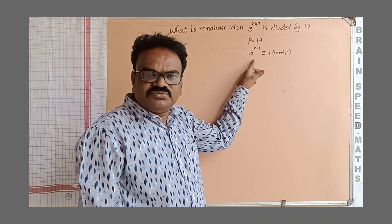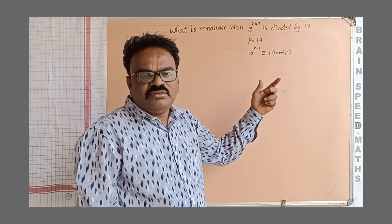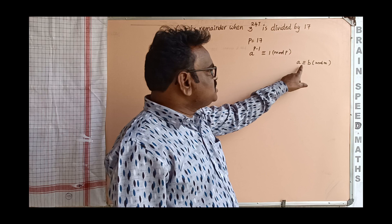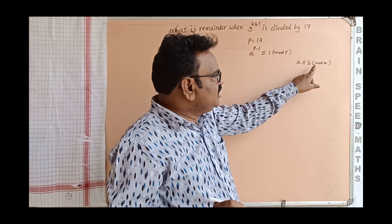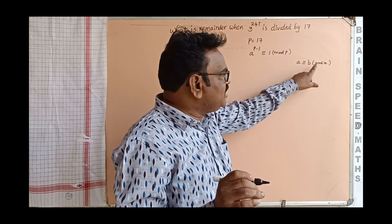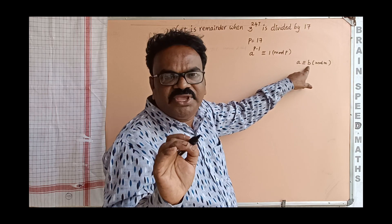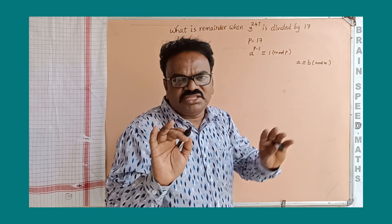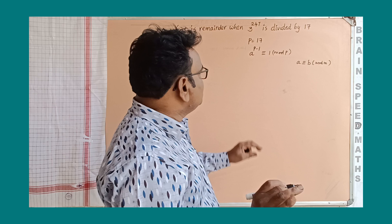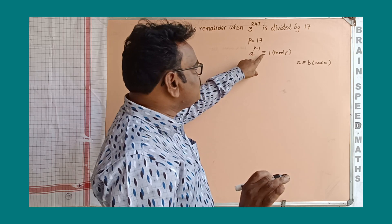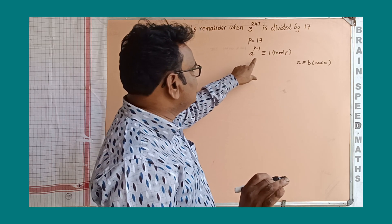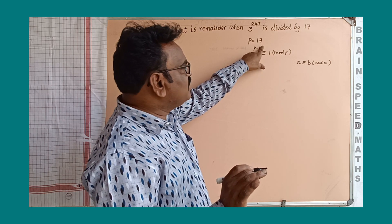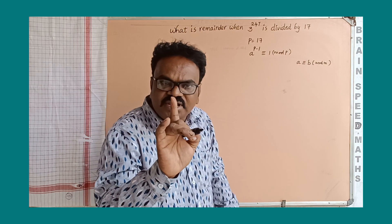We have to know this Fermat's theorem. Before that, what is the rule of the congruence? If a is congruent to b modulo m, it means if a is divided by m, we are getting the remainder b. Or a minus b is divisible by m — both are the same. So a to the power of p minus 1 is congruent to 1 modulo p means, if p is the prime number, a to the power of p minus 1 is divided by p and we get remainder 1.